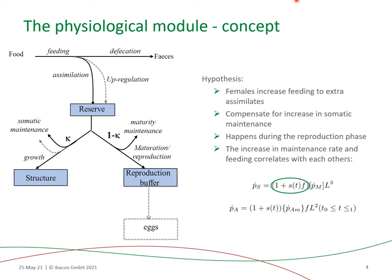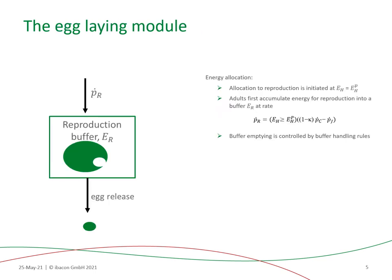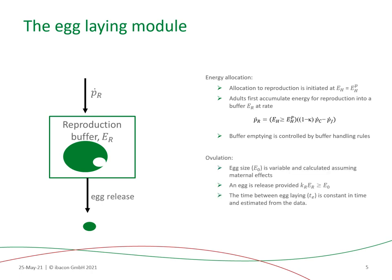These changes start at the induction of reproduction and during egg-laying. New assumptions were also posed regarding the egg-laying module itself. We assume that the allocation to reproduction starts at the maturity threshold for puberty, but that the energy is first accumulated in a reproduction buffer. The start of egg production itself is triggered by abiotic factors and follows the following rules. The first one is that the egg size is variable over time, calculated assuming maternal effects, meaning that the reserve density at birth equals the reserve density of the mother at egg formation.